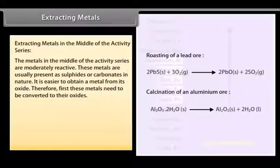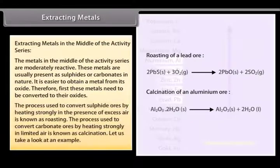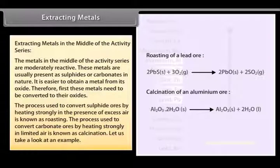Therefore, first these metals need to be converted to their oxides. The process used to convert sulphide ores by heating strongly in the presence of excess air is known as roasting. The process used to convert carbonate ores by heating strongly in limited air is known as calcination.